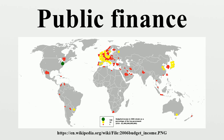Seigniorage is the net revenue derived from the issuing of currency. It arises from the difference between the face value of a coin or banknote and the cost of producing, distributing, and eventually retiring it from circulation. Seigniorage is an important source of revenue for some national banks, although it provides a very small proportion of revenue for advanced industrial countries. Some state-owned enterprises generate profits that help finance government activities. The government entities that operate for profit are usually manufacturing and financial institutions. Services such as nationalized healthcare do not operate for a profit, to keep costs low for consumers.